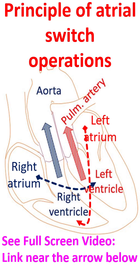Prior to that, transposition of great arteries was treated by switching the systemic and pulmonary venous return to the opposite side to functionally correct the transposition. These were called atrial switch operations. The first one, known as the Senning operation using atrial flaps, was described in 1957. The second one was the Mustard operation, using pericardium, described in 1963.